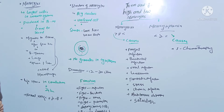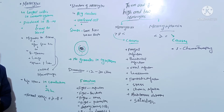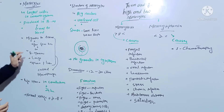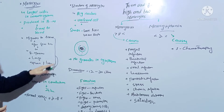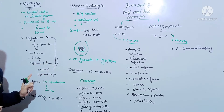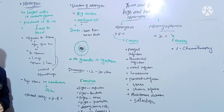Monocyte is the largest WBC in the immune system, and basically they are produced in bone marrow. After production in bone marrow, these monocytes travel to the blood, and after traveling to blood they migrate to other tissues like bone marrow, spleen, liver, and lungs. When monocytes migrate to these tissues, in that condition they are considered macrophages.